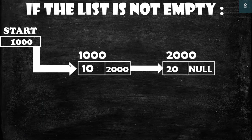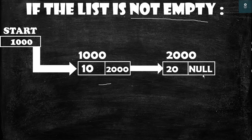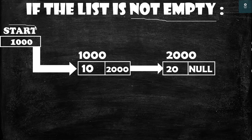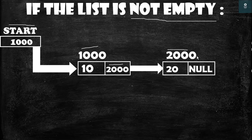Now let us see how to insert a node at the beginning of a non-empty list. The list is not empty — we have two nodes initially. Start is storing the address 1000 because the first node is at 1000. The first node stores 2000, which is the address of the second node, and the last node has null stored inside its pointer field.